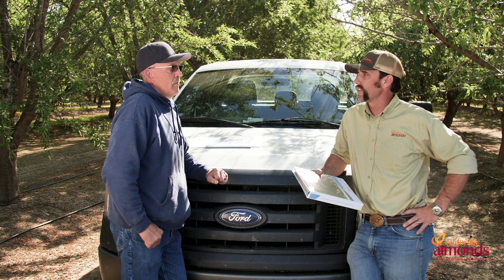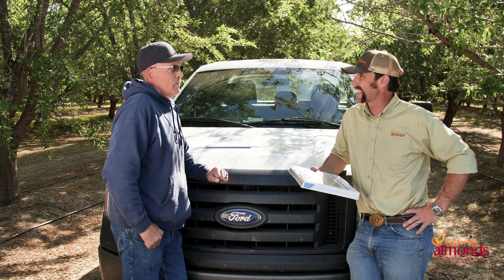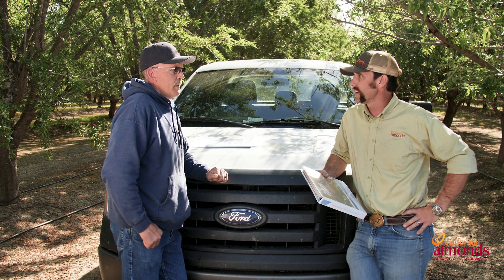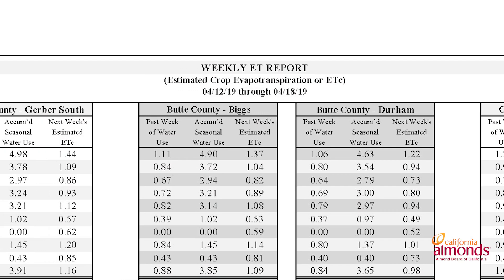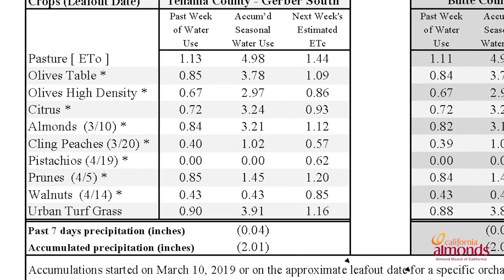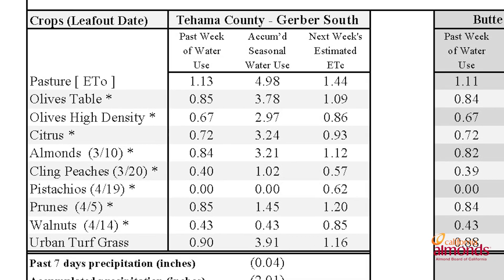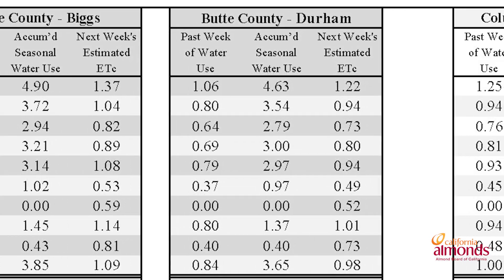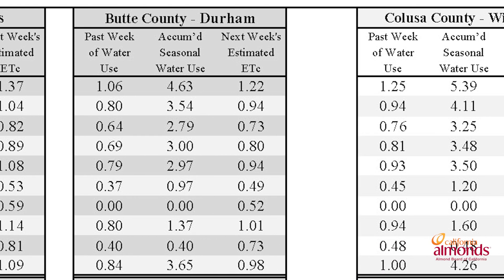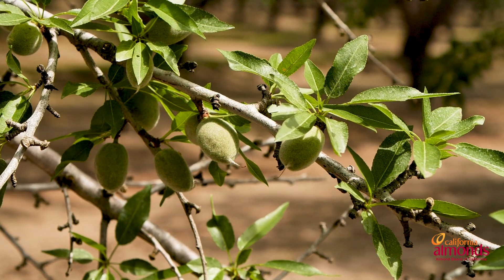What are some of the ways that you've found easiest for a grower to get that evapotranspiration data? One place I like to suggest is weekly ET reports put out by the Cooperative Extension Offices. What it provides is water use for your orchard for the past seven days, a running total of water use since leaf out, and then a seven-day forecast — once you commence the irrigation season.